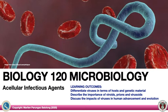Hello, good morning. This is our lecture for Acellular Infectious Agents, again for Biology 120 Microbiology. Learning outcomes for this lecture are the following: differentiate viruses in terms of host and genetic material; describe the importance of viroids, prions, and virozoids; and discuss the impacts of viruses in human advancement and evolution.